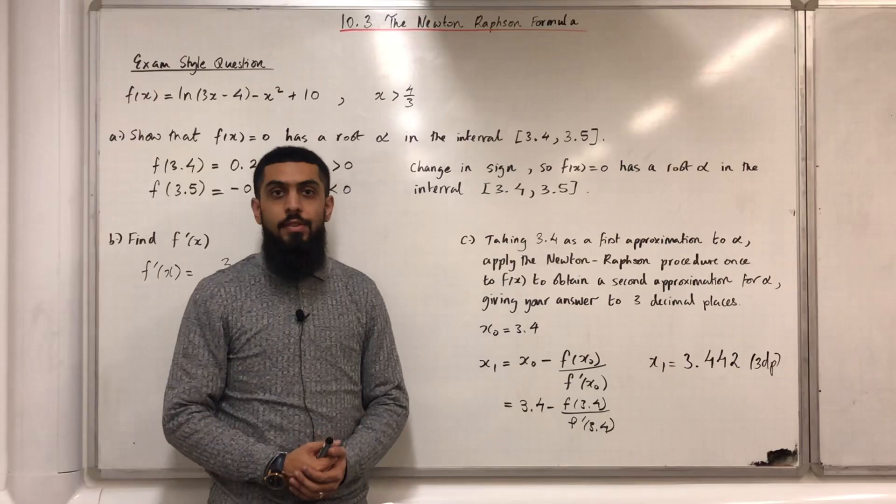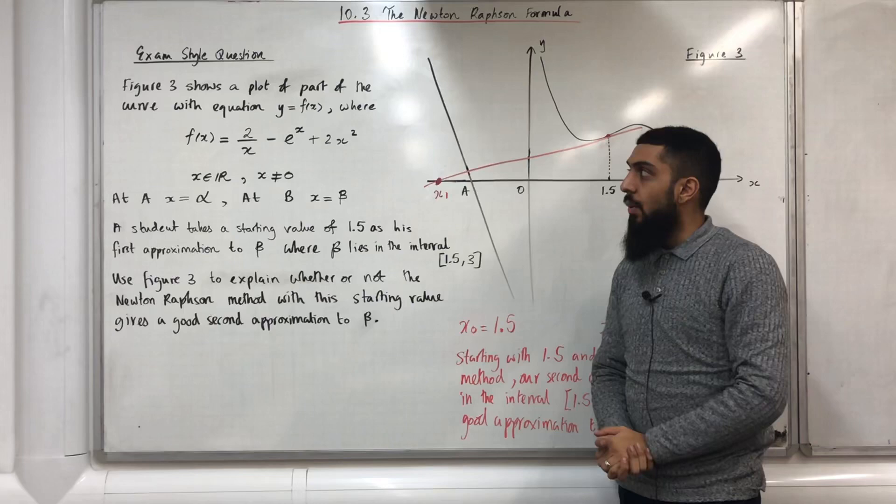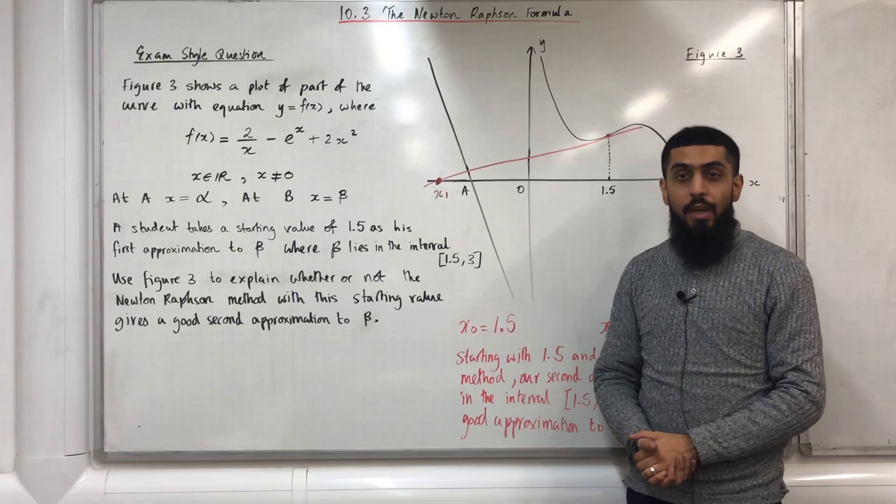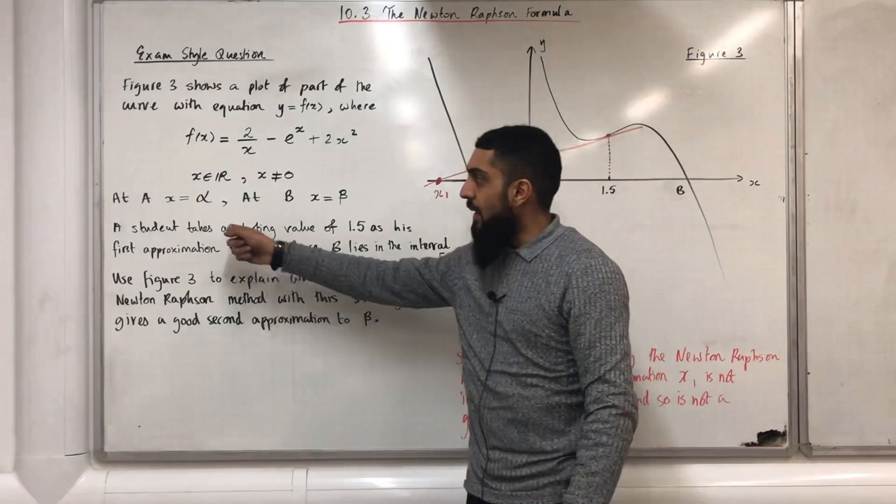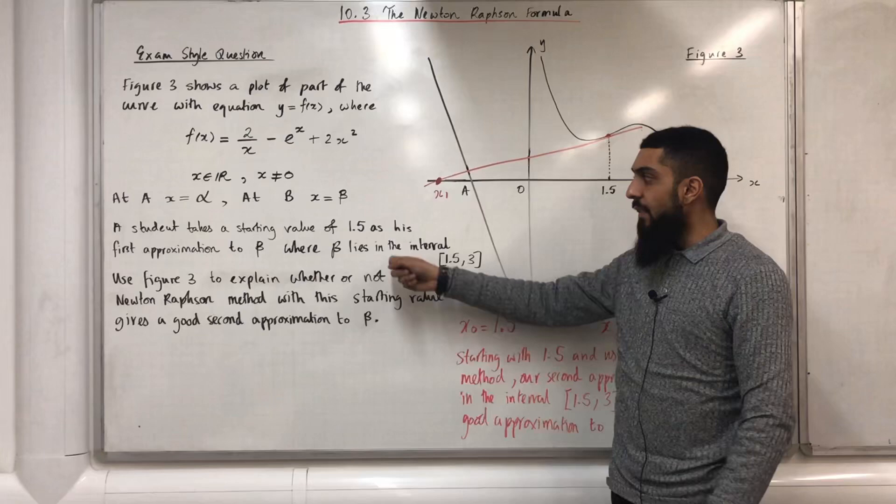Here is another exam style question. Figure 3 shows a plot of part of the curve with equation y equals f(x), where f(x) equals 2/x minus e^x plus 2x squared. x is an element of the real numbers, x is not equal to zero. At A, x equals alpha. At B, x equals beta. A student takes a starting value of 1.5 as his first approximation to beta, where beta lies in the interval [1.5, 3].